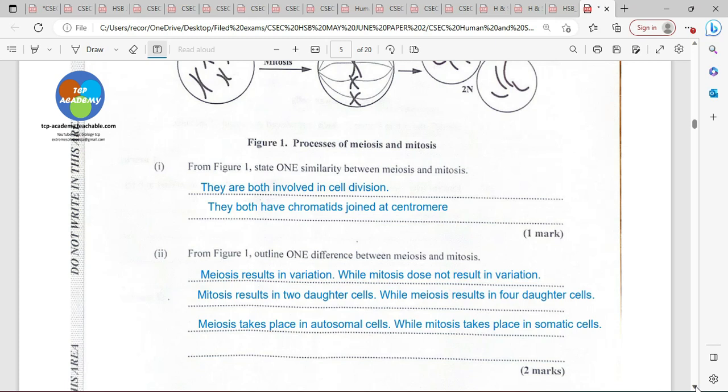Let's look at the questions. From figure one, state one similarity between meiosis and mitosis. They are both involved in cell division. It's evident here. They both have chromatids which are joined at the centromere. And it's also true that they have chromosomes that are all lined up on these spindle fibers.